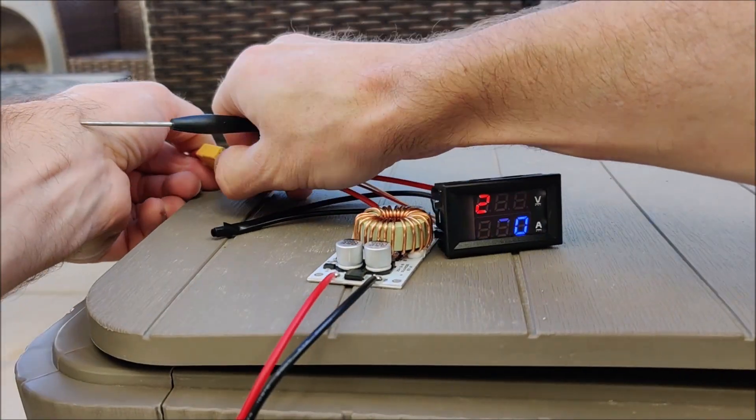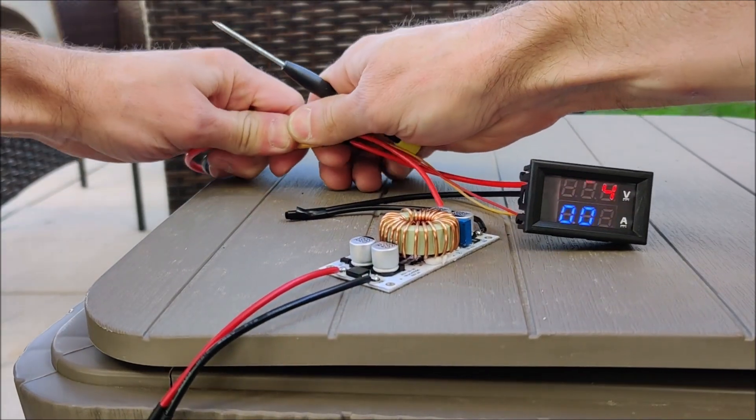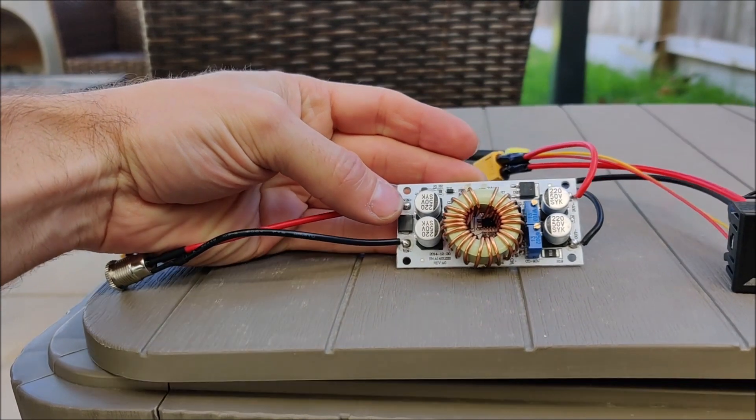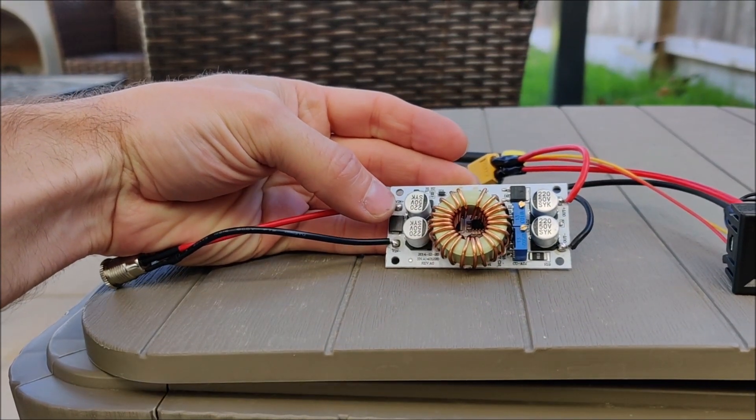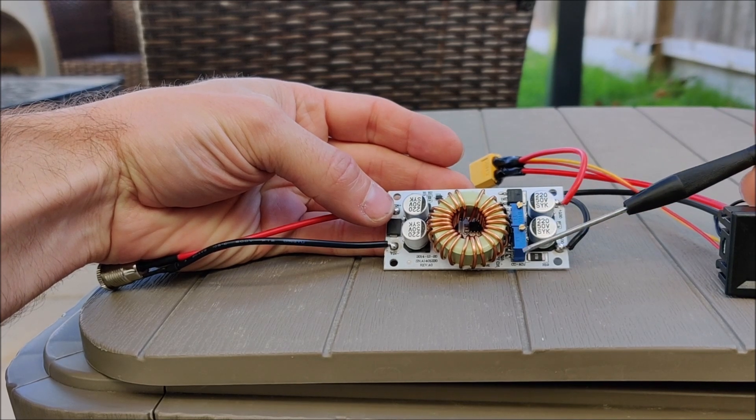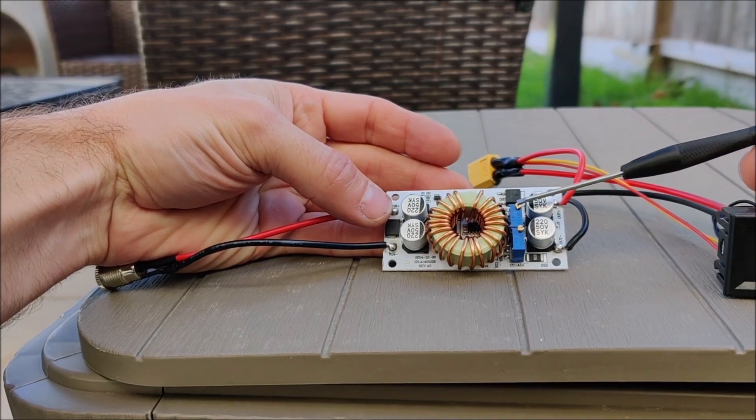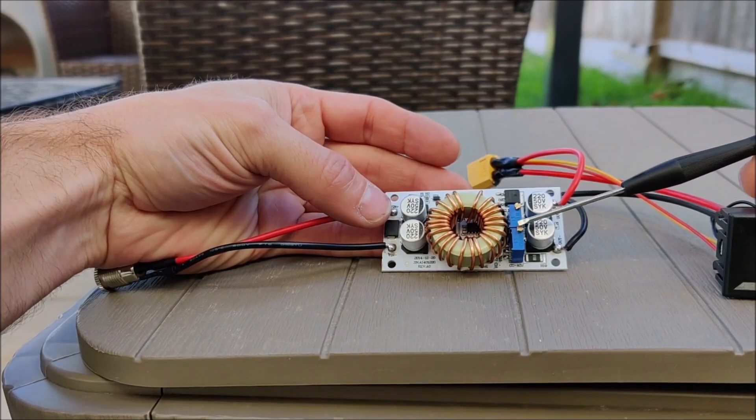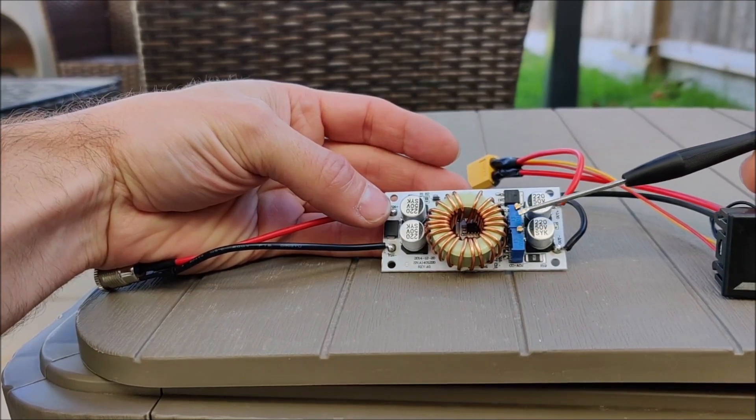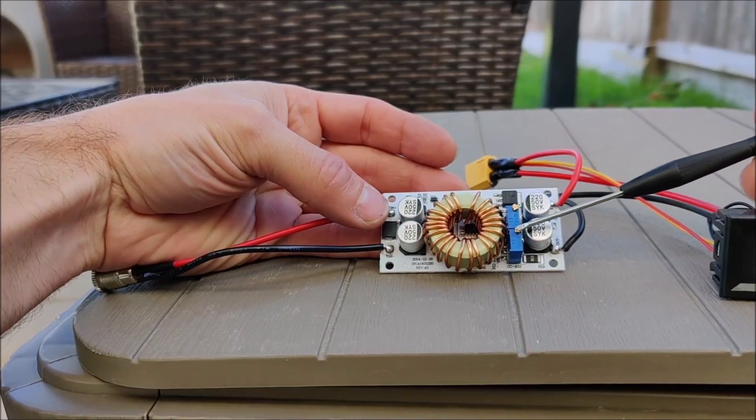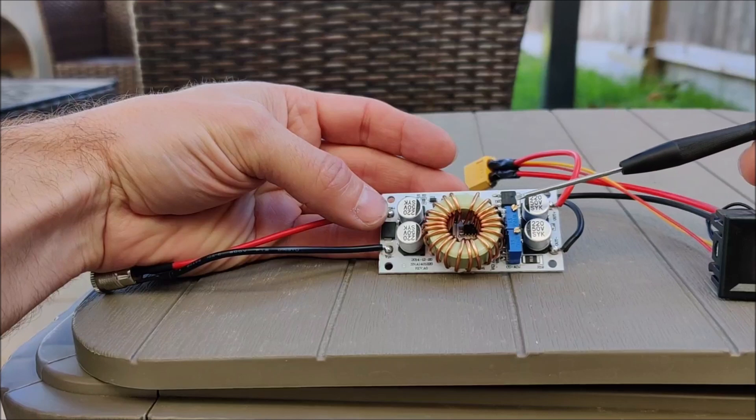So let me unplug it. This is a 250 watt boost converter with constant current and constant voltage. When we use these, the trick is we want to lock the voltage and max out the amps so it hits the constant voltage before it hits constant amps. That's what you want to do.